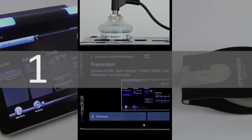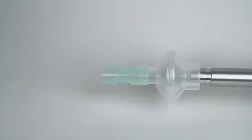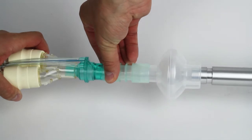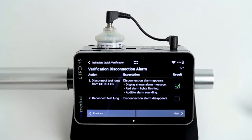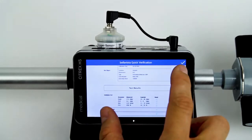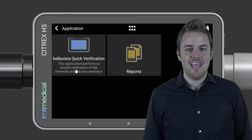The app guides you through the following three simple steps: first, connect the Citrix H5 to a ventilator; secondly, perform verification; and finally, generate a test report. So let's get started. Launch the app Bella Vista Quick Verification in Citrix H5.